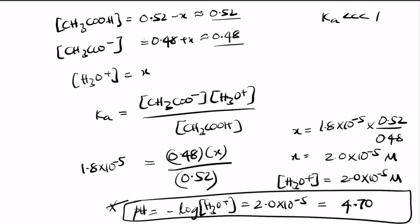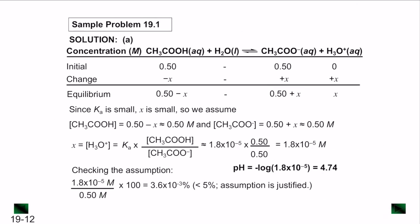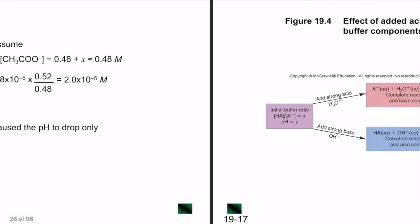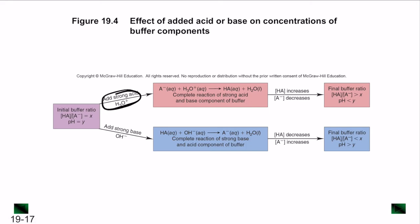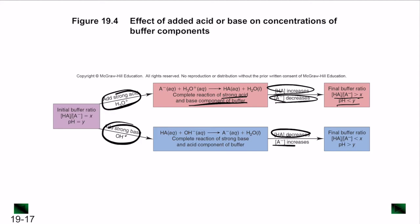Notice that adding acid decreases the pH (4.70) and adding base increases the pH (4.77) compared to the original 4.74. When you add a strong acid, it reacts with the base component of the buffer, increasing the acid concentration and decreasing the base concentration, so the acid/base ratio increases and pH decreases. When you add a strong base, you decrease the acid and increase the base concentration, so the pH increases above the original value.